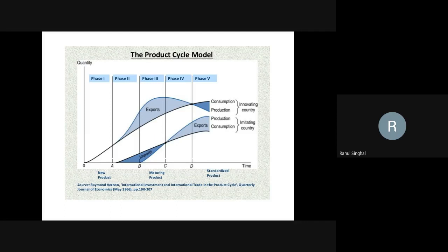As we all are aware, each product has its own lifecycle, like a natural person has. Every product has a lifecycle and like a natural person, every product has its own death. When we talk about a lifecycle of a product, it starts from the introduction stage, then it enters the growth stage, then into a maturity stage, and then into a decline stage.